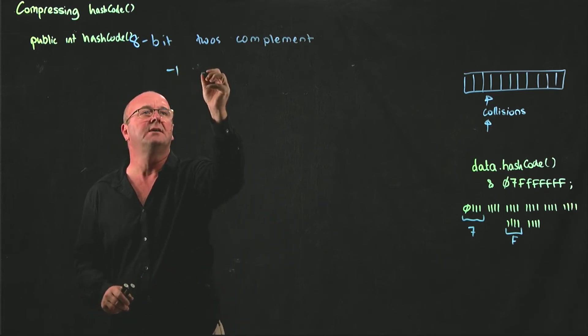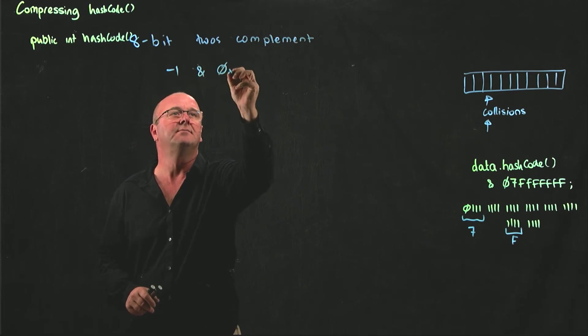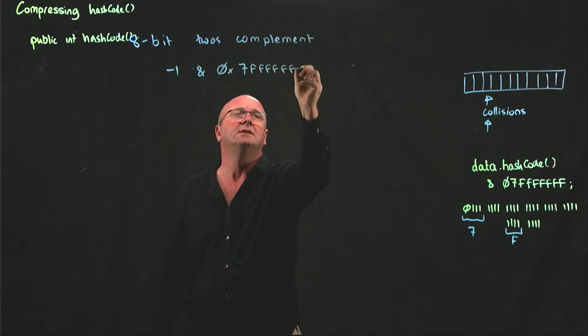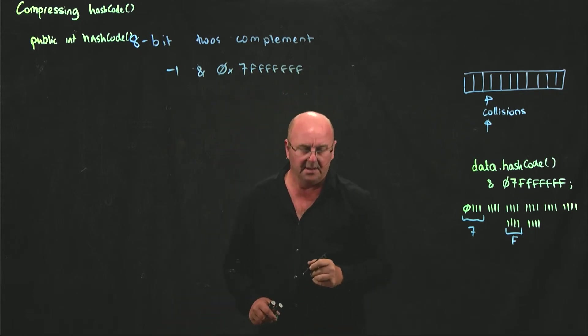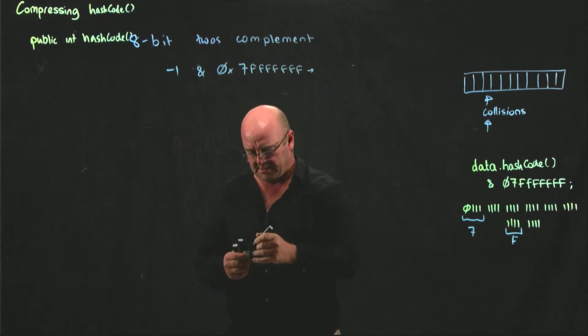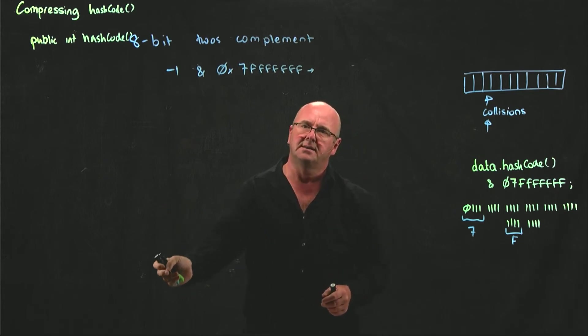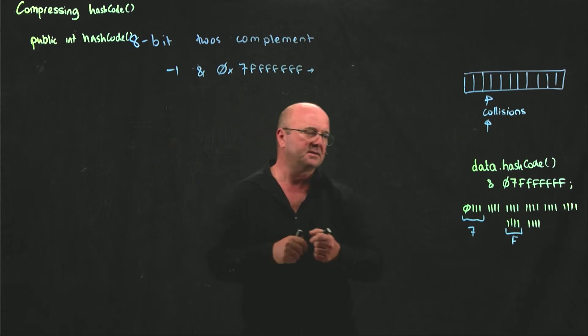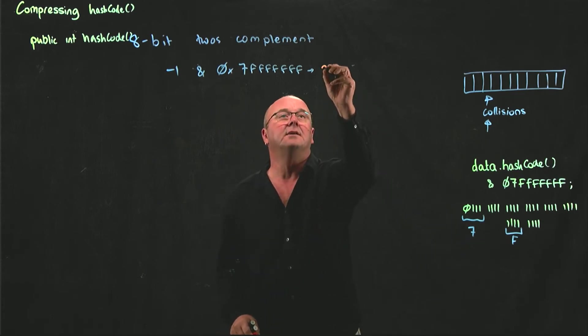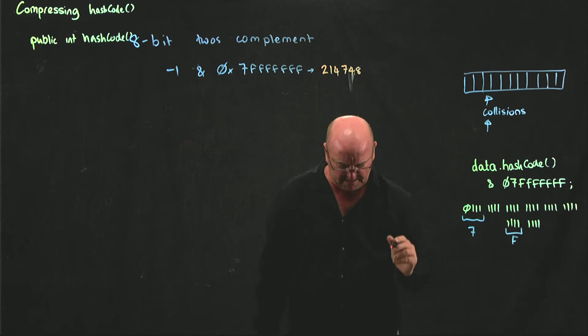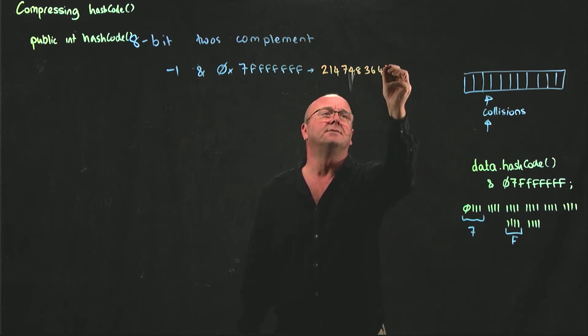So what that means when we take our hash code number and AND it with 0x7FFFFFFF... If we start with, for example, minus 1 and we AND that with 0x7... So if we start with minus 1, we end up not with positive 1 because all we've done is take that first bit that is initially 1 and we've made it 0. We end up with 2147483647.